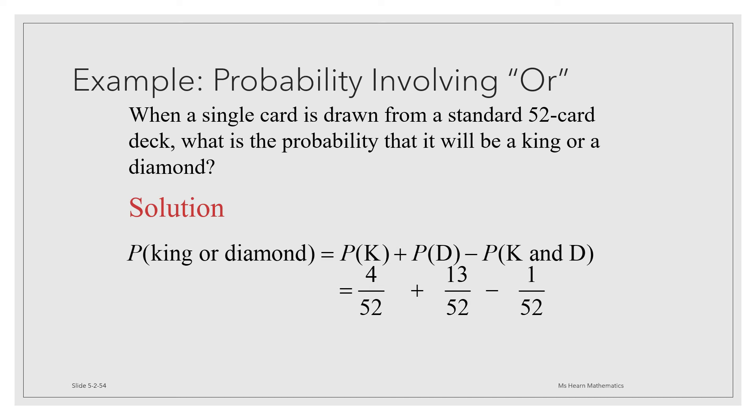One of the nice things about these problems is that the denominators are always already common denominators. So we have 4 over 52 plus 13 over 52 minus 1 over 52. You just add 4 plus 13 minus 1 and you get 16 over 52. And you should reduce to lowest terms. 4 divides evenly into 16 and 52, so we get 4 thirteenths.